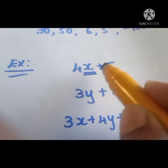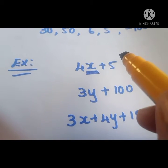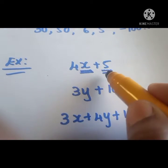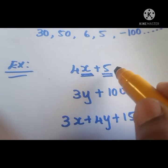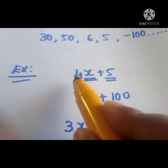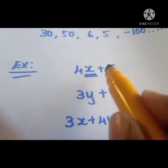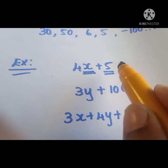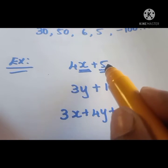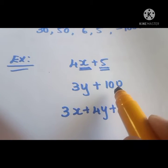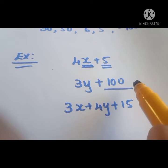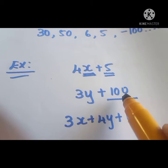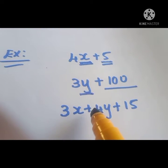Here you can see x is a variable, and plus 5 — here only a number is present, so we can say this is a constant. So, Algebraic Expression is a combination of variable and constant with arithmetic operations. In 3y plus 100, 100 is a constant and y is a variable.